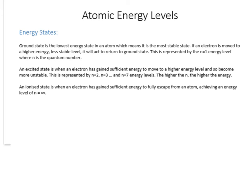First, some key terminology. There are three kinds of state an electron can be in. The first is called ground state — this is the lowest possible energy state in an atom, making it the most stable. It's very close to the nucleus and corresponds to the closest shell, known as n equals 1, where n is the quantum number.